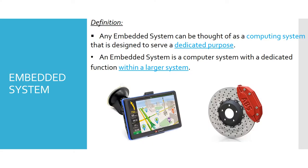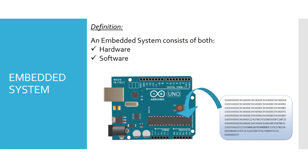An embedded system is a computing system that is designed to serve a dedicated purpose. Mostly it will be a subsystem to perform a dedicated function within a larger system — say for example, a GPS navigator or an anti-lock braking system within a vehicle. An embedded system consists of both hardware as well as software. When chips are built into the system and software is loaded on that for a particular functionality, it becomes an embedded system.